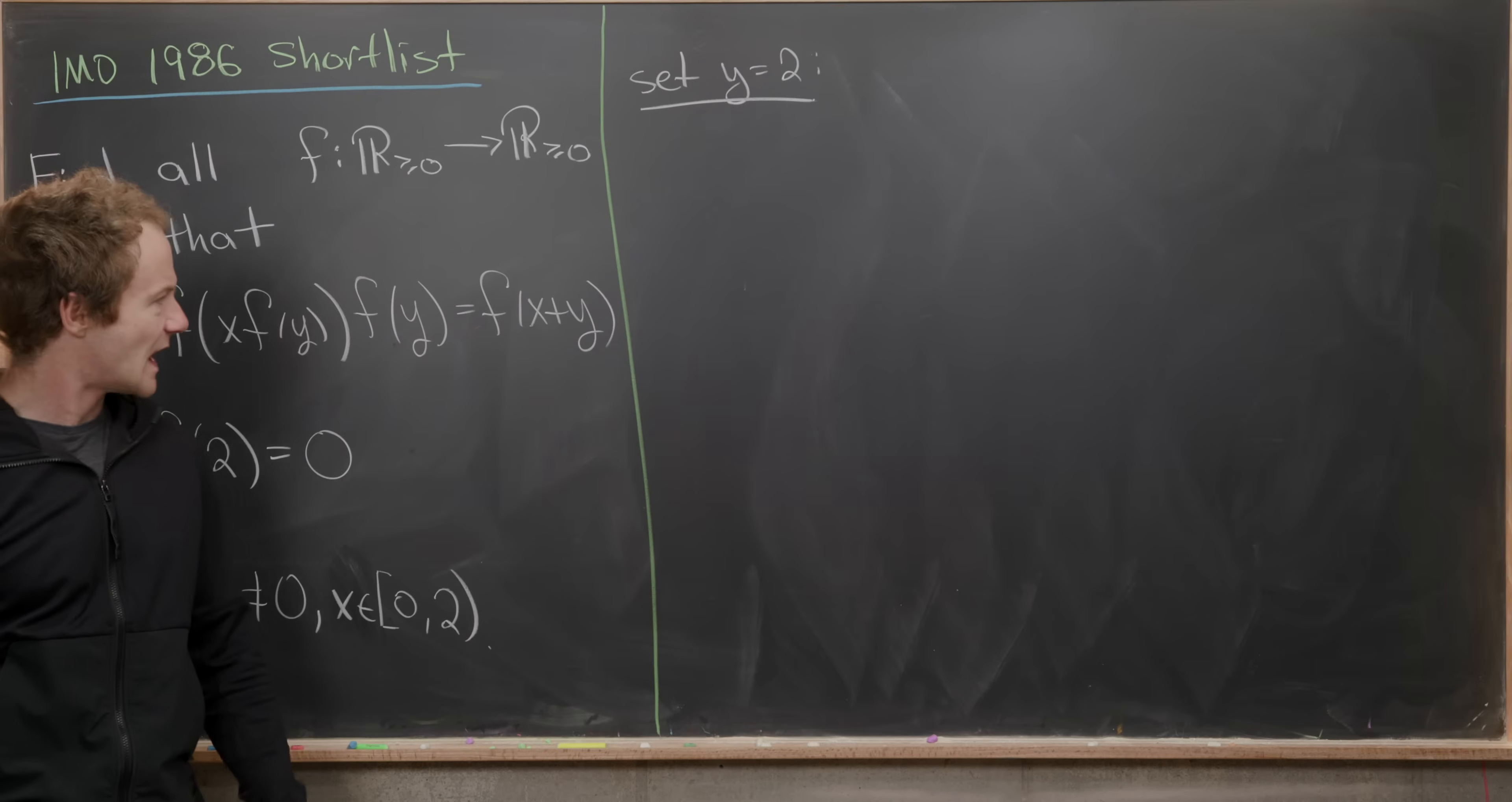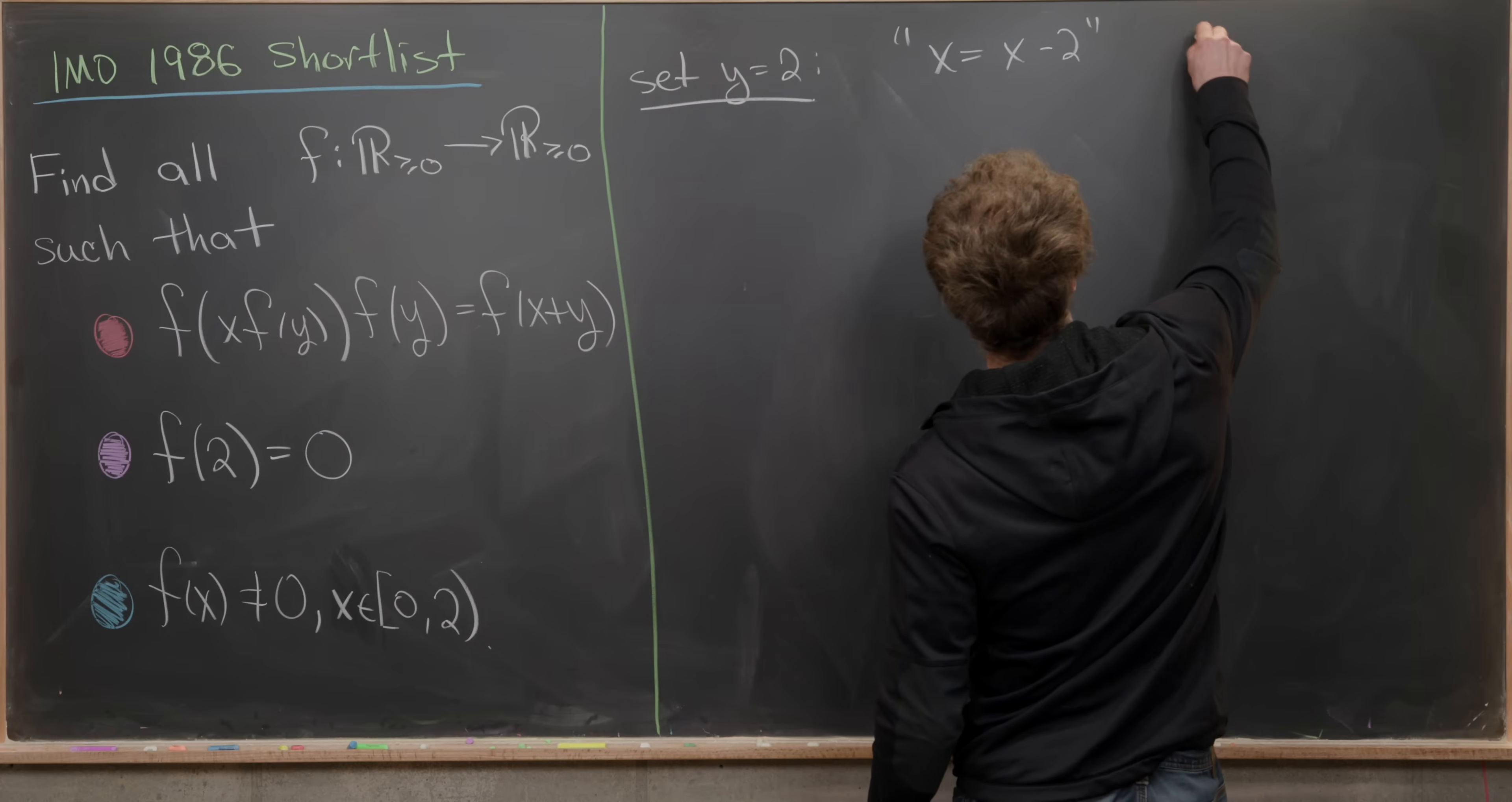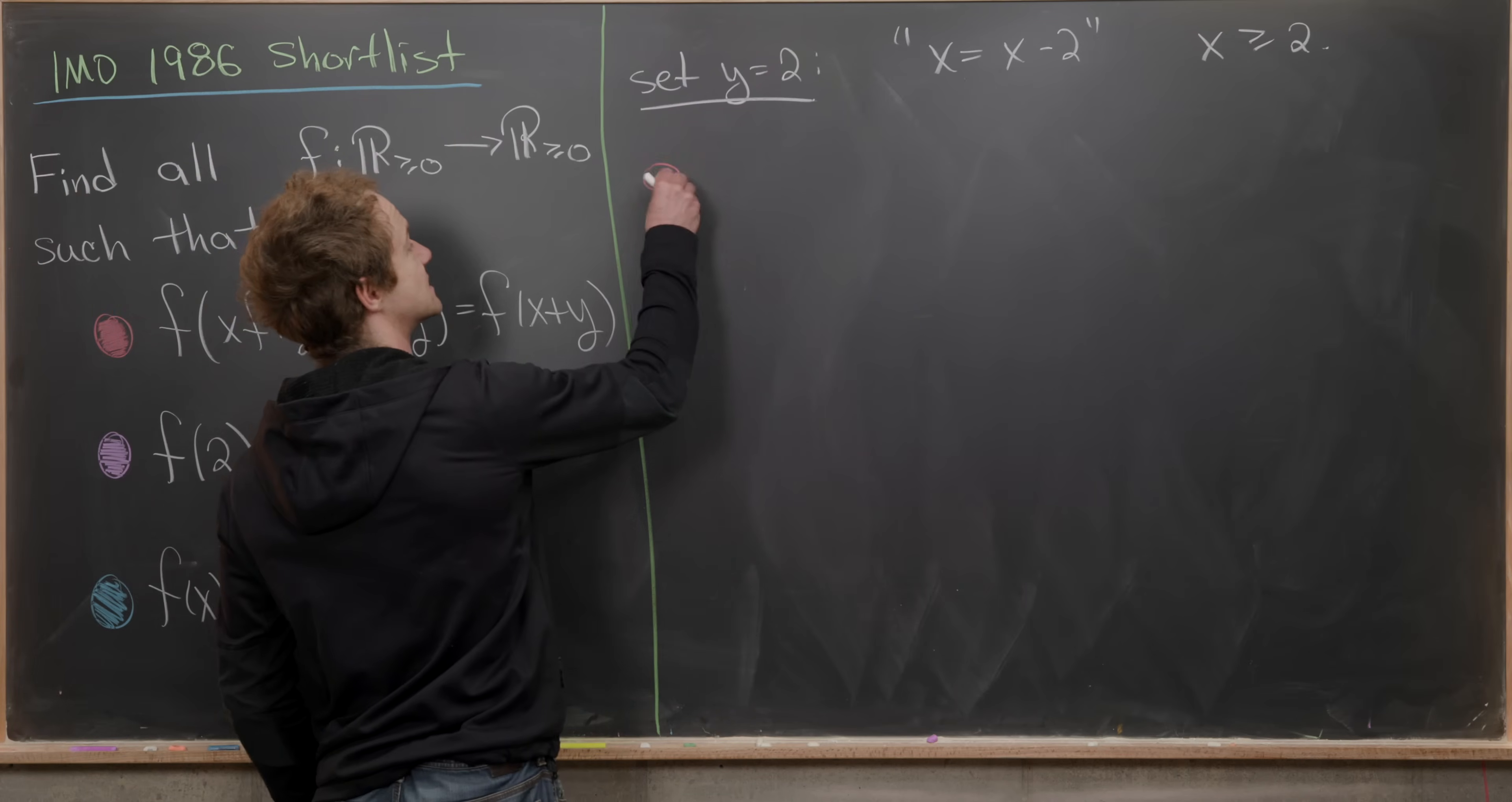But then if we set y equal to 2, we have f(x+2) here. So maybe we could set x equal to something that'll cancel out that plus 2. We can do that very easily. We'll also set x equal to x-2. And that immediately tells us that this x value has to be bigger than or equal to 2, because if it weren't, we'd be plugging in a negative number into the function. But that wouldn't make any sense.